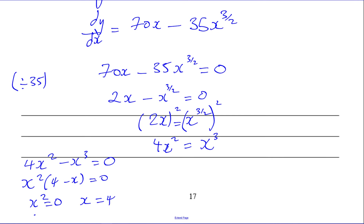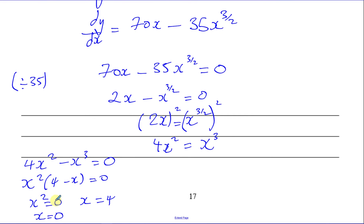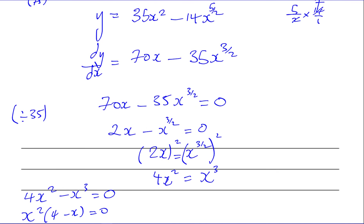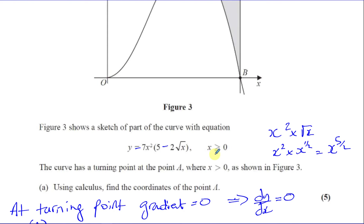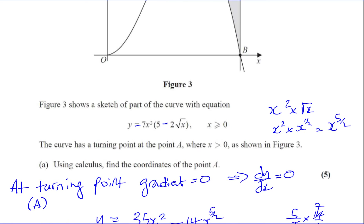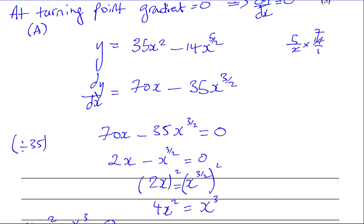So either x squared equals zero, giving x equals zero, or 4 minus x equals zero, giving x equals 4. Since the question says A is where x is greater than zero, we don't need the x equals zero solution. So x equals 4 must be the solution for the turning point A.